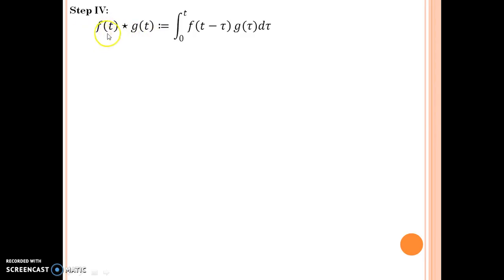From definition we substitute here instead of f it would be e to the power a t and instead of g t it would be e to the power minus a t times t. So f of t minus tau, that means you have to replace for this function, you have to replace t by t minus tau and if you multiply a inside you get e to the power a t minus a tau.